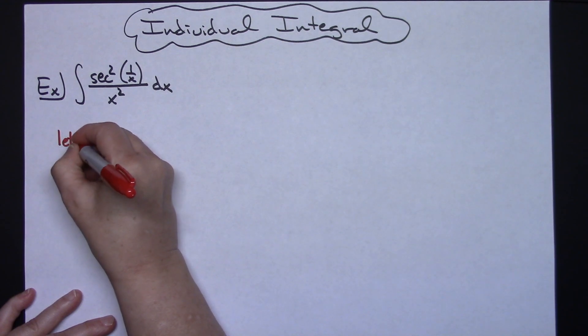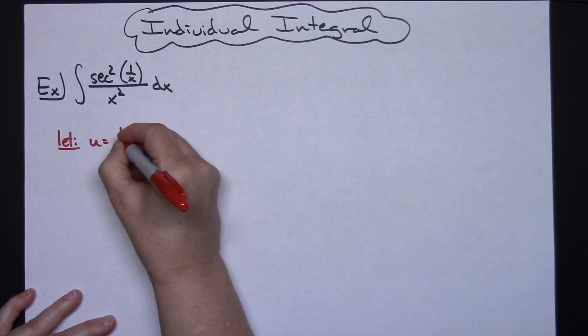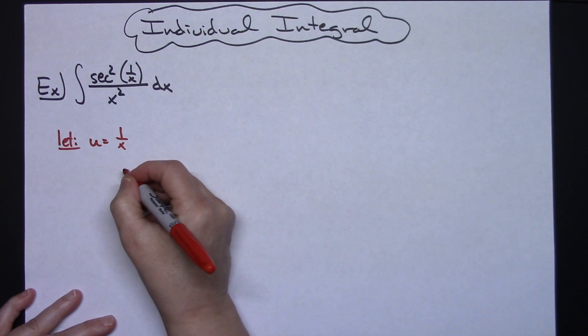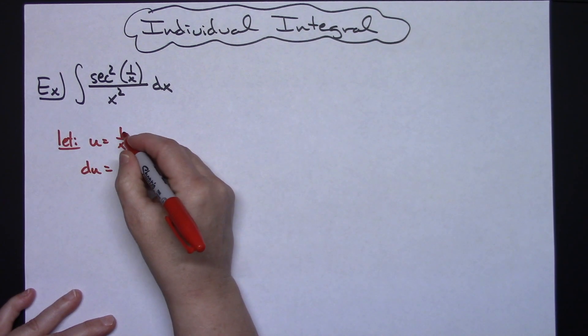So we'll start with letting u equal 1 over x. Then we're going to take the derivative of both sides. du is equal to,